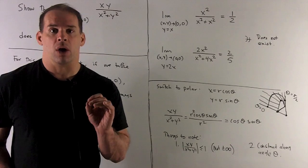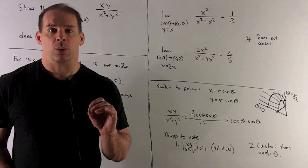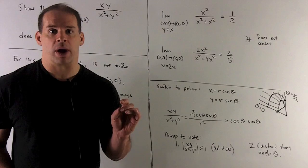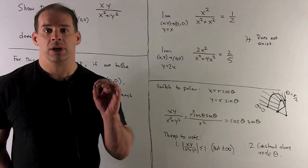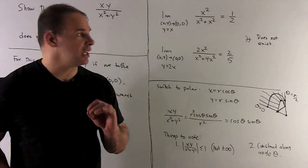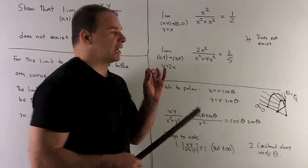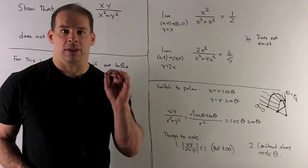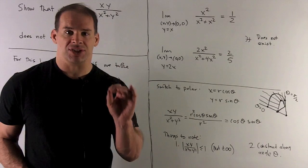If I go along y=2x, we have 2x² over (x² + 4x²). That's going to go to 2/5, and we see these limits are not equal. Therefore, the limit in general does not exist.